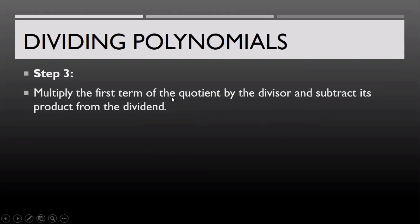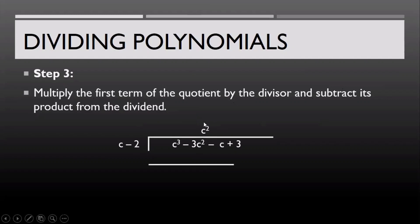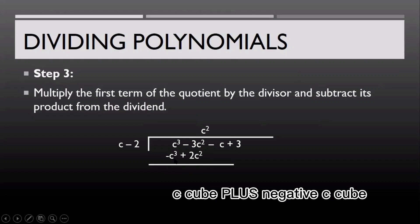Step 3: we multiply the first term of the quotient by the divisor and subtract its product from the dividend. So we multiply c squared by c minus 2. That gives us c raised to 3 and negative 2c squared. Before you subtract, do not forget to change the sign of the subtrahend. By distributing the sign, we get negative c cubed plus 2c squared. So c cubed minus c cubed gives us 0, and negative 3c squared plus 2c squared gives us negative c squared.